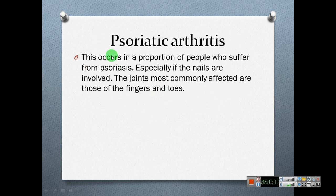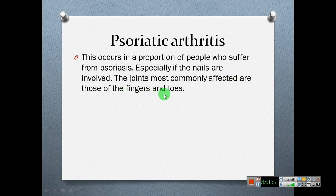Psoriatic arthritis occurs in a proportion of people who suffer from psoriasis, which is a skin disease — especially affecting the nails. If the nails are involved, psoriatic arthritis may occur. The joints most commonly affected are those of the fingers and toes.